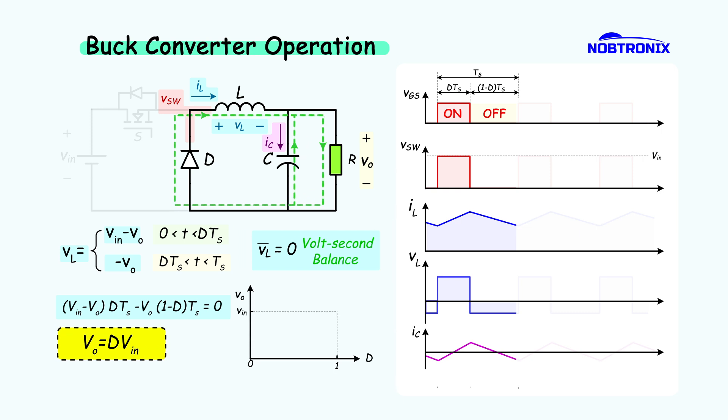If the duty cycle is zero, the output voltage is zero. As the duty cycle increases, the output voltage goes up proportionally. The highest it can go is equal to the input voltage, so this converter steps the voltage down and is called a buck converter.